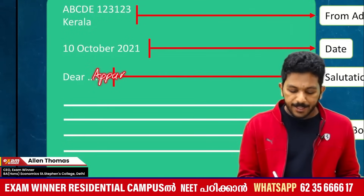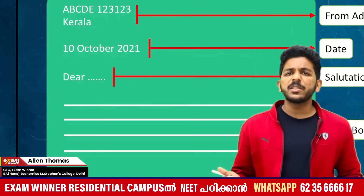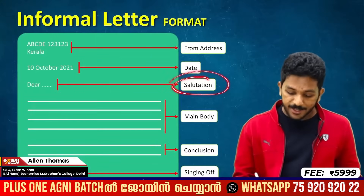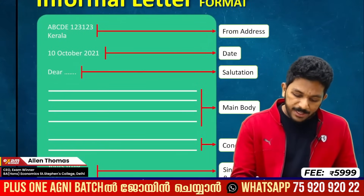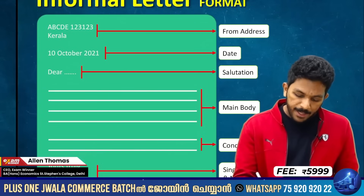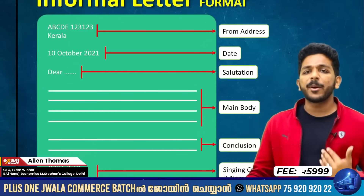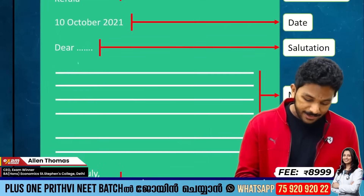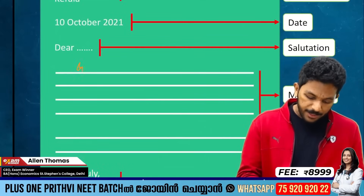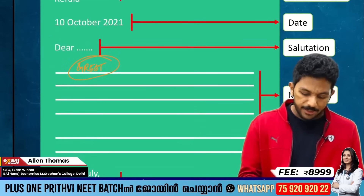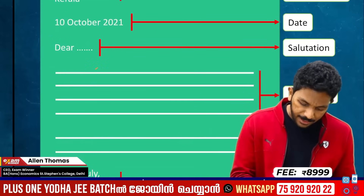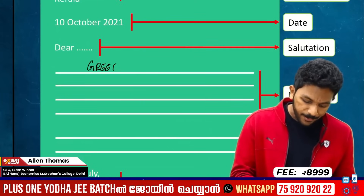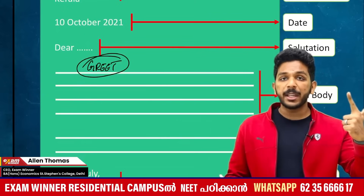Then comes the salutation: Dear Appa, Dear Amma, Dear Appu, Dear Ammu — and for formal use, Dear Sir or Madam. The salutation is how we greet the recipient. There are three steps in the main body. Step one: greet and ask about the recipient. For example: 'How are you? How are we doing? I miss you.' This is the opening of your letter — you greet them first and inquire about their well-being.